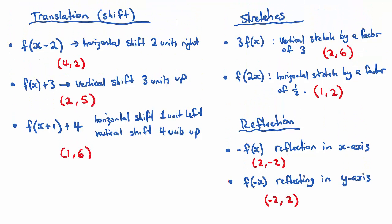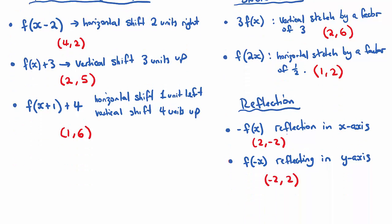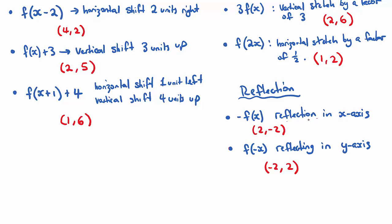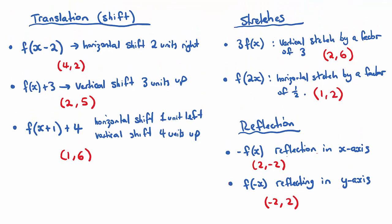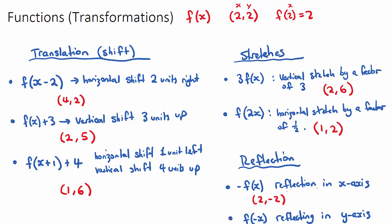So that's an example of what happens to a singular point under each transformation. To summarise: x plus or minus inside the bracket is a horizontal shift; plus or minus outside is a vertical shift; a stretch outside the function is a vertical stretch; inside is a horizontal stretch by a factor of 1 over the number. The two reflections are either in the x-axis or in the y-axis. I recommend you try some exam questions, and feel free to watch the videos if you need help. Good luck.